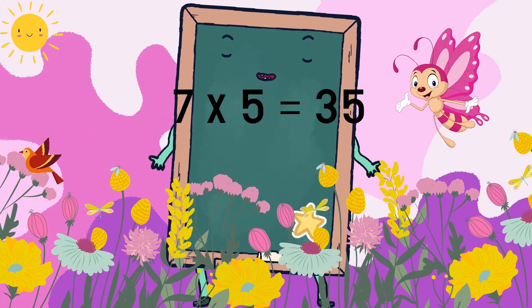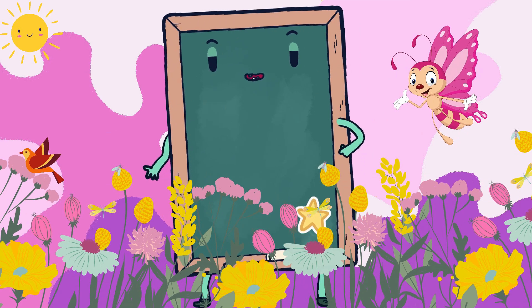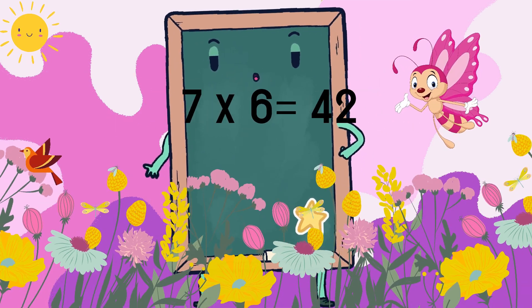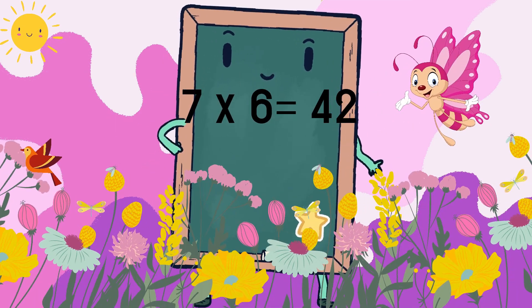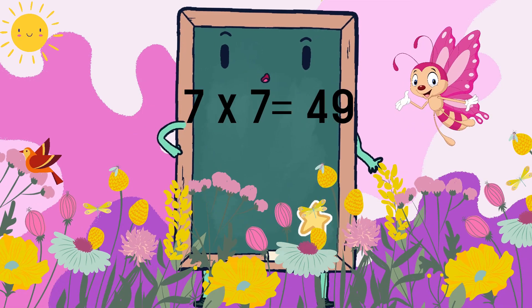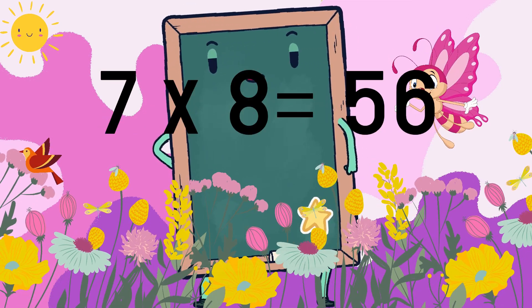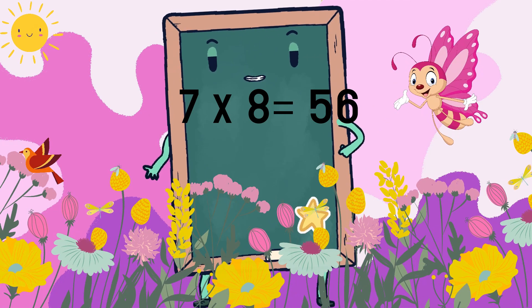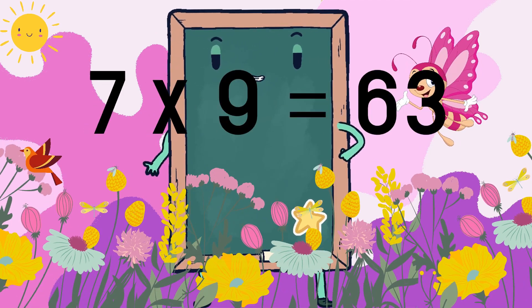7 fives are 35, 7 sixes are 42, 7 sevens are 49, 7 eights are 56.